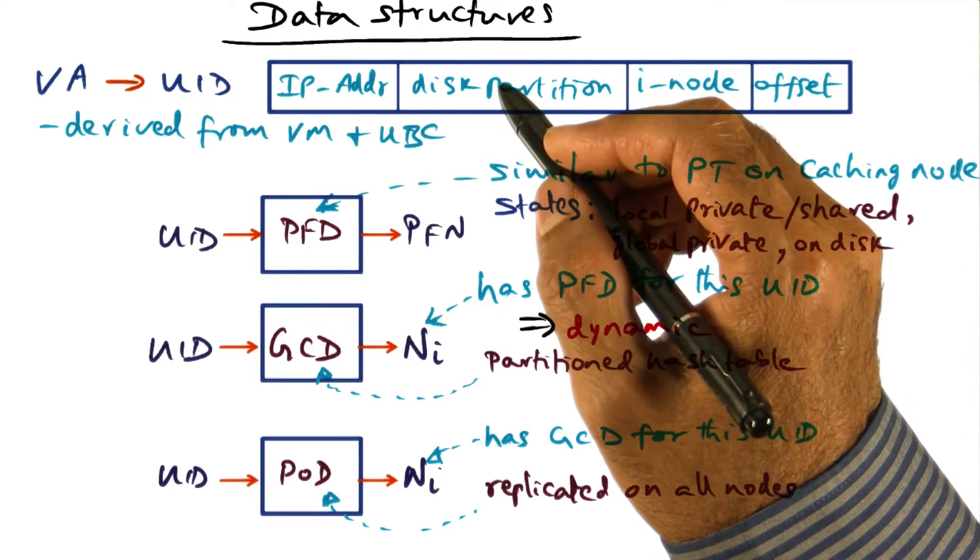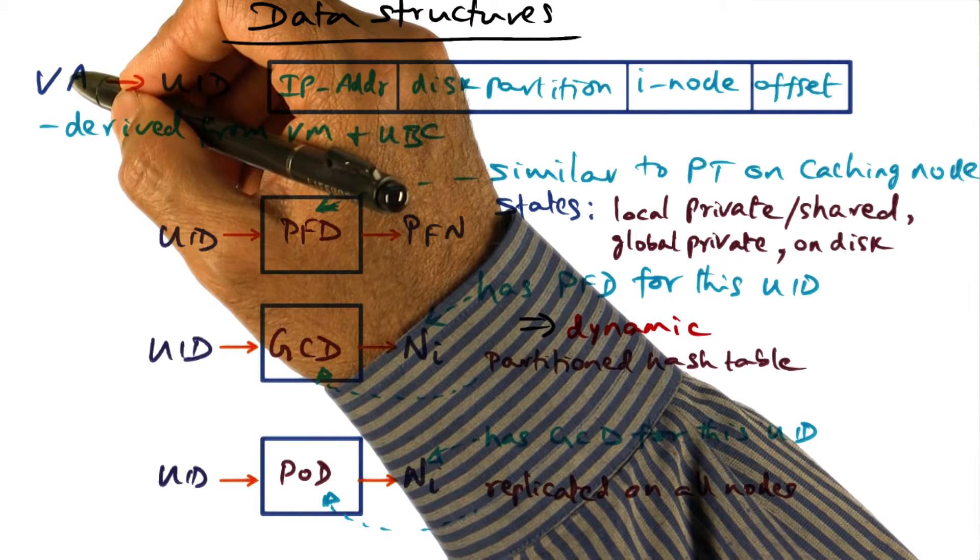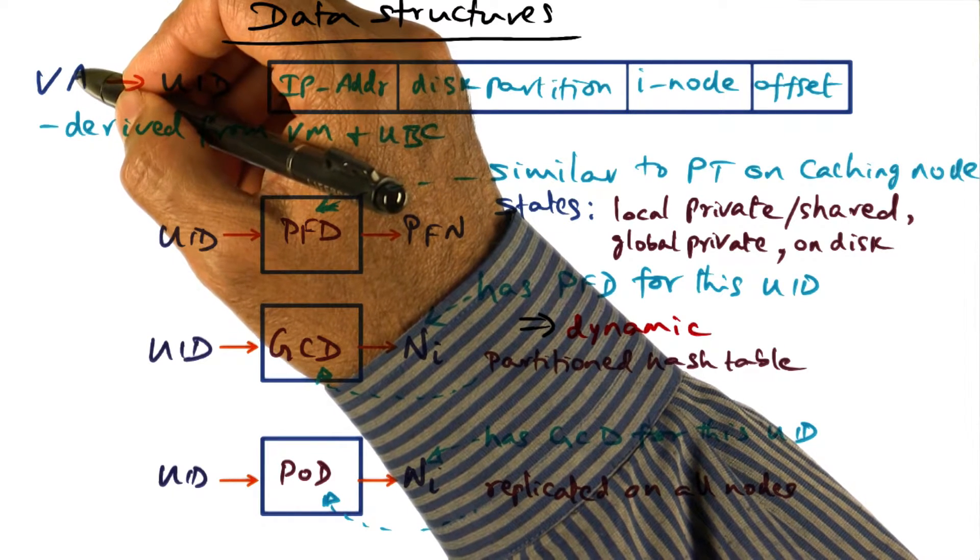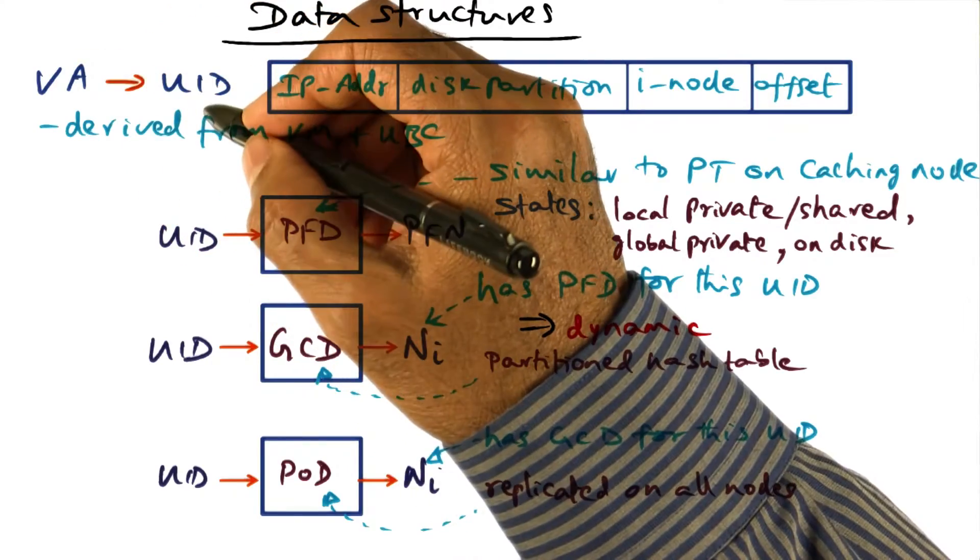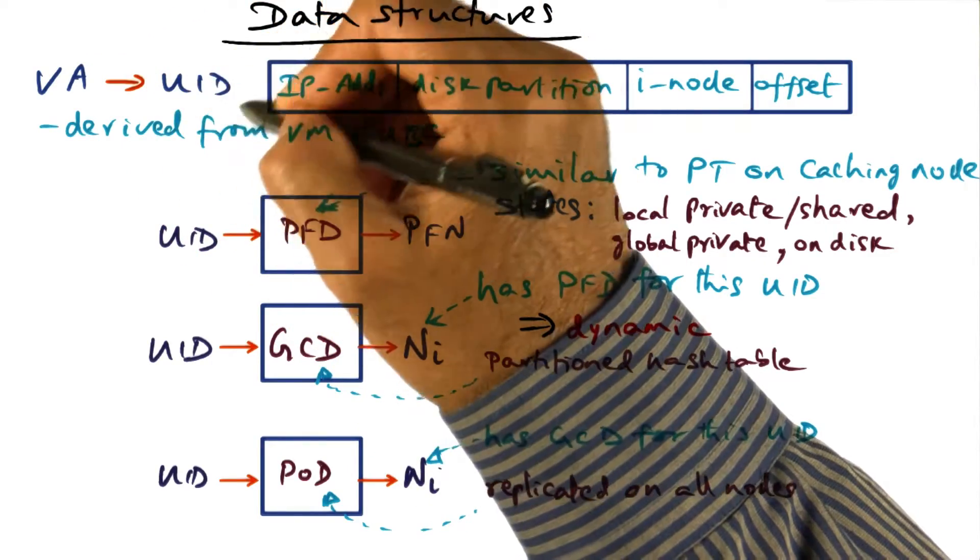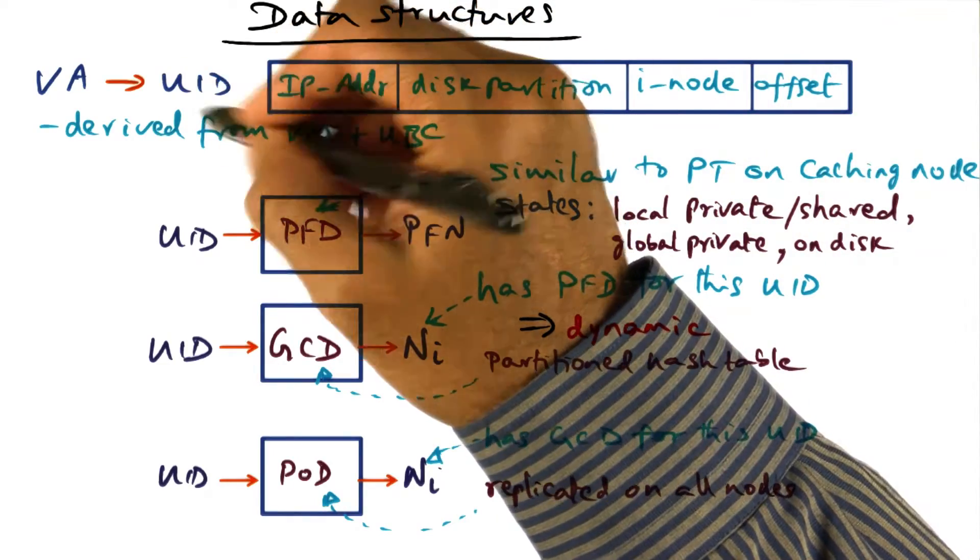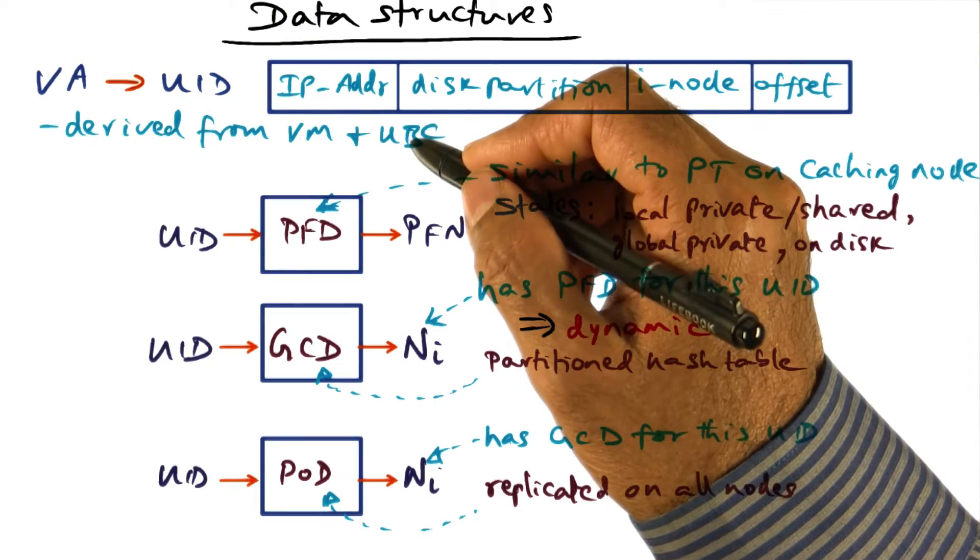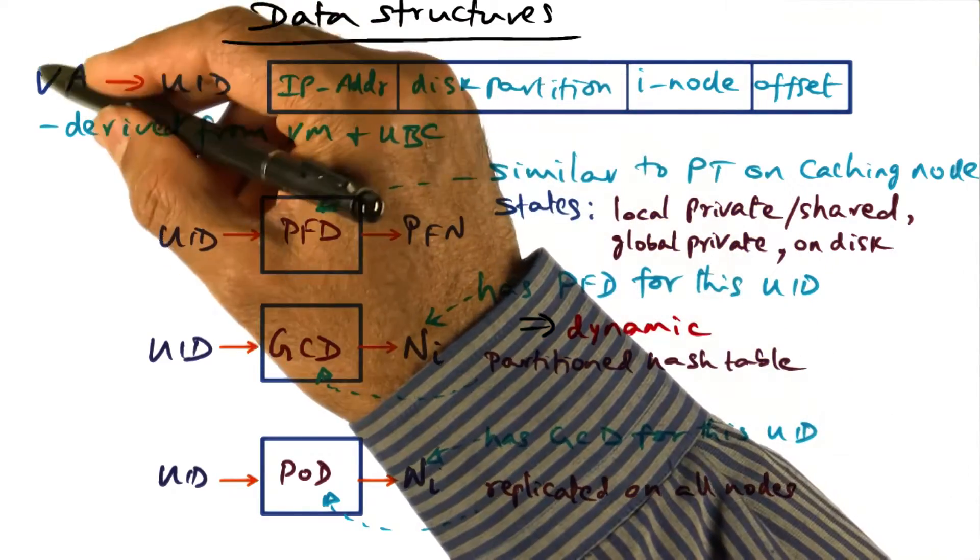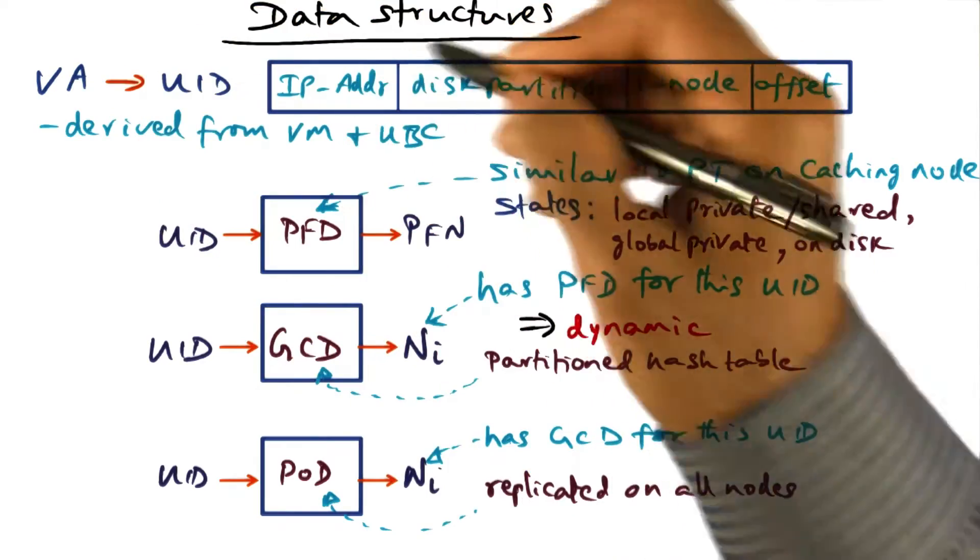First thing that GMS has to do is to convert a virtual address, which is a local thing so far as a single process is concerned, and convert that virtual address into a global identifier, or what we'll call as a universal ID. And the way we derive the universal ID from the virtual address is fairly straightforward if you think about it. We know which node this virtual address emanated from, IP address.